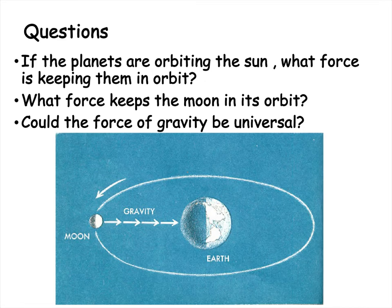Once upon a time, scientists and astronomers started asking questions like, if the planets are orbiting around the sun, what force is keeping them in orbit? Why aren't they just flying off? What force is keeping the moon in its orbit around the earth? Is it gravity? Could this force of gravity that we know about and that Newton talked about be a universal force?